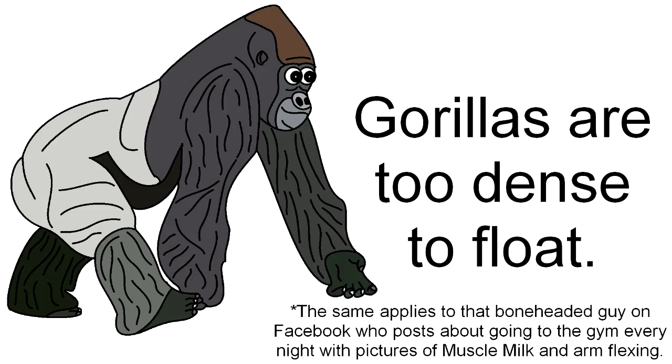Gorillas, on the other hand, cannot swim at all because they are constructed mostly of muscle, which is denser than water and can't float. If a gorilla wanted to swim, it would have to be trained to swim in a similar body position to humans. It could only stay afloat until it ran out of energy.